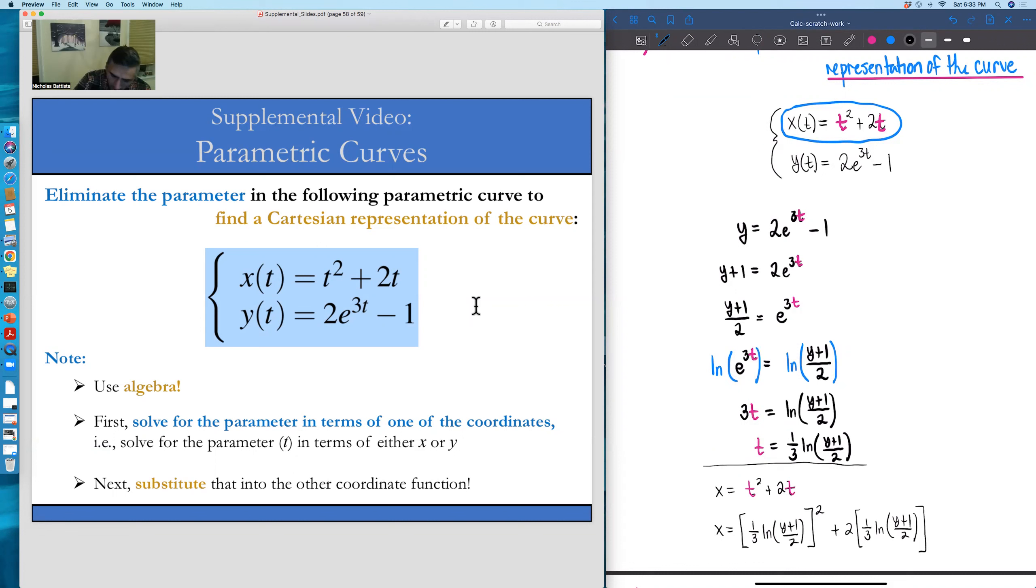So this last equation that we have, it's an equation that relates our coordinate x to our coordinate y, but there's no parameters inside of it. We have a direct relationship between x and y itself. Thus, we have eliminated that parameter and found a Cartesian representation of that curve.